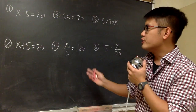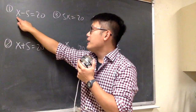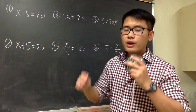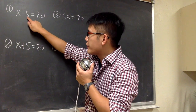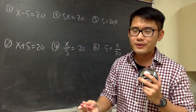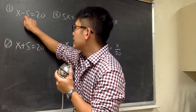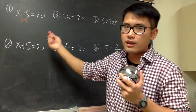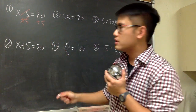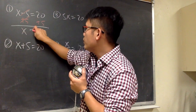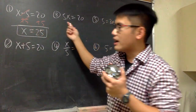All these equations involve 5 and 20 but with different operations. Let's look at the first one. We have x minus 5 is equal to 20. To solve an equation, we have to find what x equals. The operation here is x minus 5, so we do the opposite operation — the opposite of subtracting is to add. So we add 5 to both sides, so this and that cancel. We get x by itself, equal to 20 plus 5, which is 25. That's the answer.